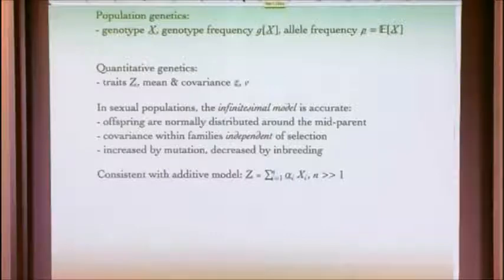We have two parents. The offspring are normally distributed with a mean of the average of the two parents and with a variance which is essentially fixed, independent of selection. That variance within families may increase due to mutation, decrease due to inbreeding. But crucially, it can be approximated as being independent of the process of selection. This framework actually lies behind practical plant and animal breeding and turns out to be an extremely good approximation. It can be justified as the limiting case of a model with very large numbers of genes of small effect, those effects being additive.